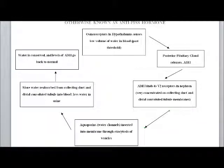Because there are more aquaporins in the membrane, more water will leave the collecting duct and distal convoluted tubule and go back into the blood. More water will be reabsorbed. As a result, there's less water in the urine and a lot more solutes.